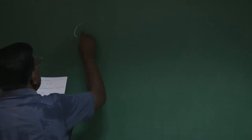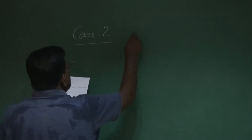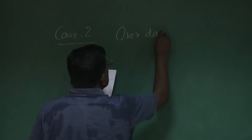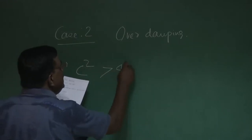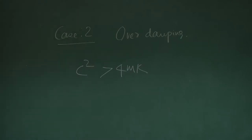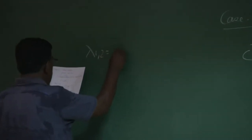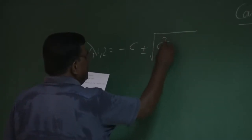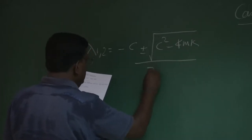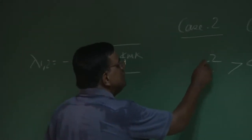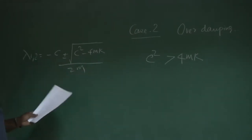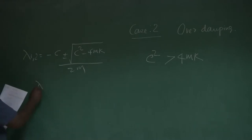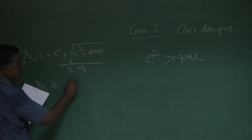In continuation to our lecture, now we will talk about case 2, which is over-damping. Remember, that is the case where c square is greater than 4mk. If you see the roots, lambda 1 and 2 is minus c plus minus under root c square minus 4mk by 2m. So if c square is greater than 4mk, then naturally this is positive — no complex part. Now, you could see that both lambda 1 and lambda 2 will be negative.